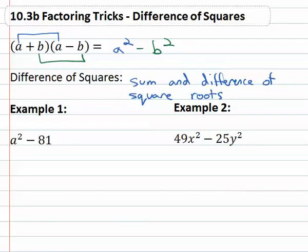So if we see a squared minus 81, two terms that we can take the square root of. The square root of a squared is a. The square root of 81 is 9. Two terms subtracted, the sum and the difference of squares is going to factor to the sum of the square roots, a plus 9, and the difference of the square roots, a minus 9.